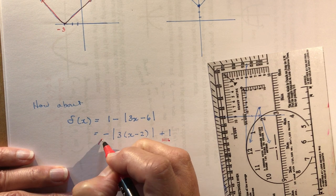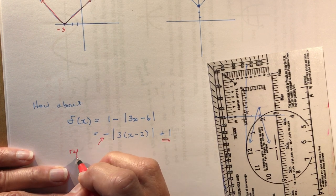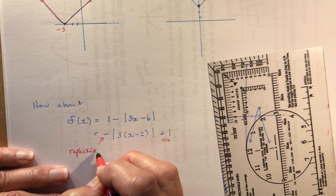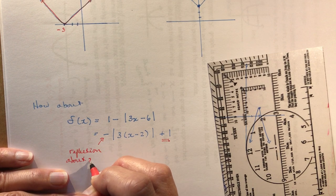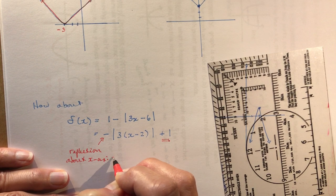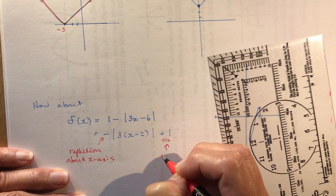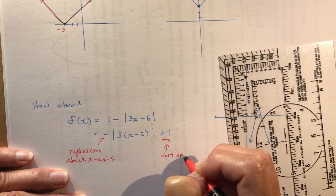The negative, this means a reflection. Reflection about the x axis. The plus 1 is a vertical shift up 1 unit.